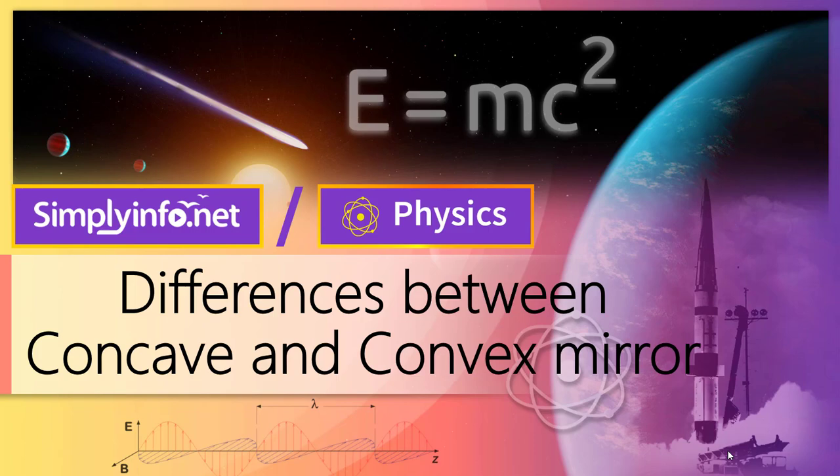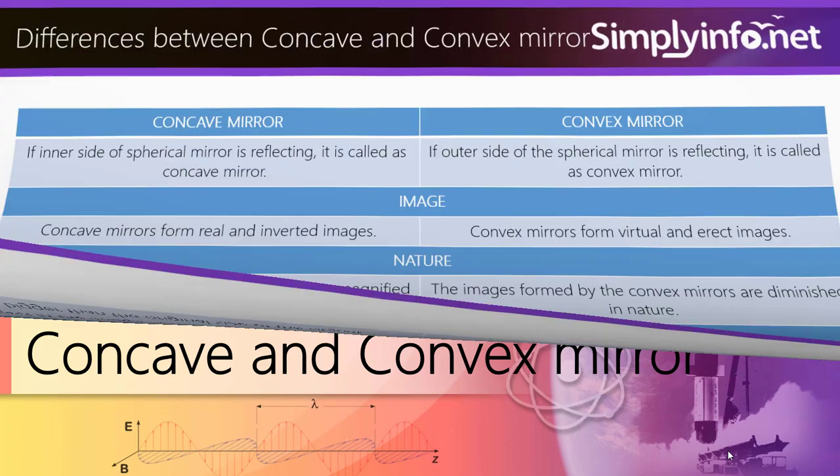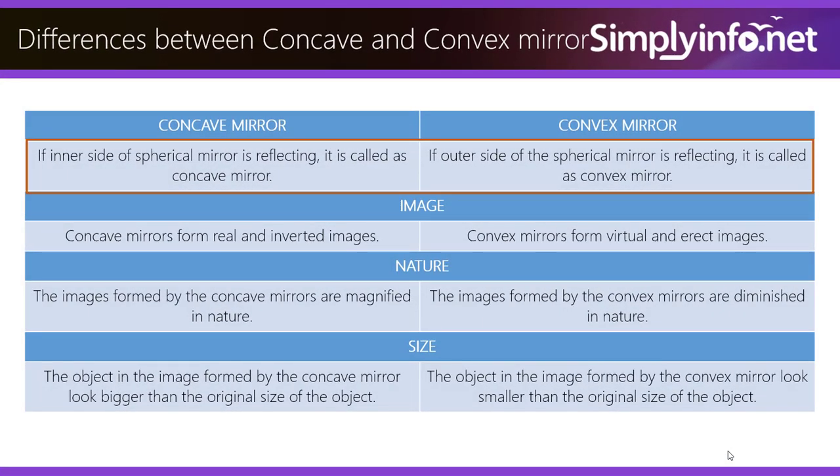Differences between concave and convex mirror. If the inner side of the spherical mirror is reflecting, it is called as concave mirror. Whereas for convex mirror, if the outside of the spherical mirror is reflecting, it is called as convex mirror.